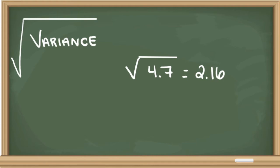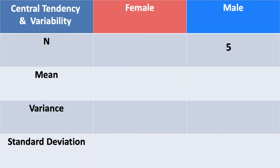Going back to our chart, we can now fill in the data for females. We have 5 females, a mean of 13.2, a variance of 4.7, and a standard deviation of 2.16. Now we need to do the exact same thing for the males.